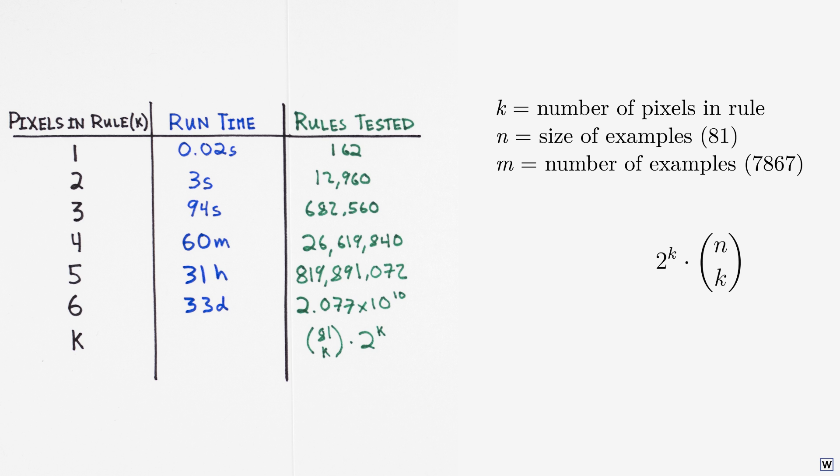We need to test 2 to the k times n choose k rules, and we're testing each rule on all m examples. So the total number of individual tests required should be 2 to the k times n choose k times m.